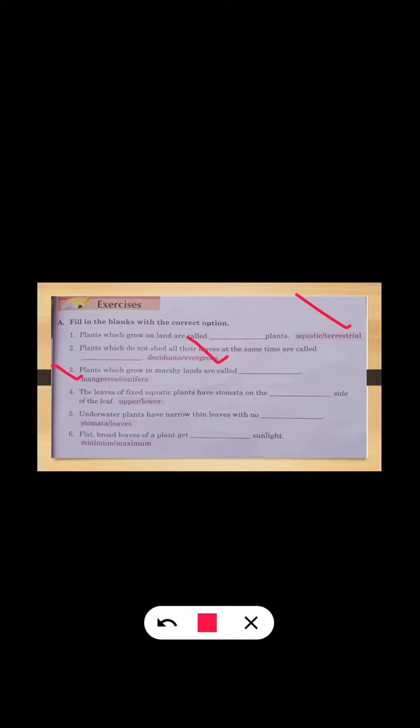The fifth one is: The underwater plants have narrow thin leaves with no [blank] - stomata. The sixth one is: The flat broad leaves of a plant get [blank] sunlight. So the answer is maximum sunlight.